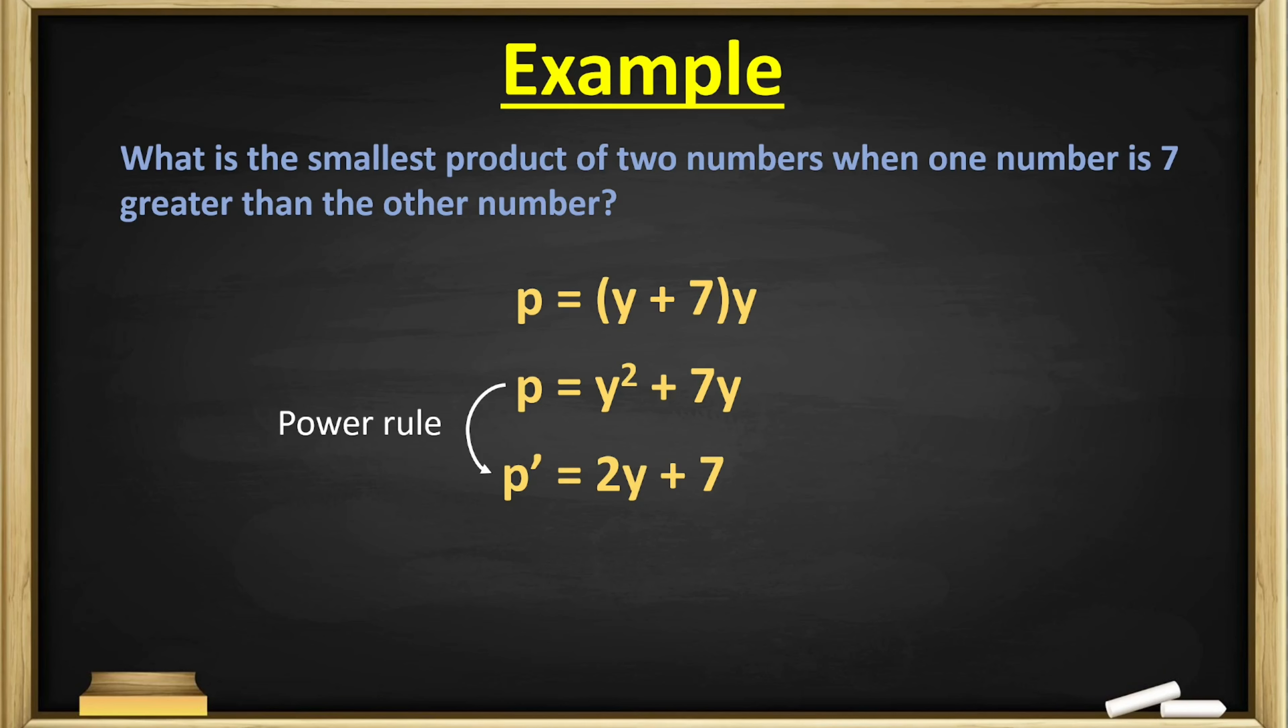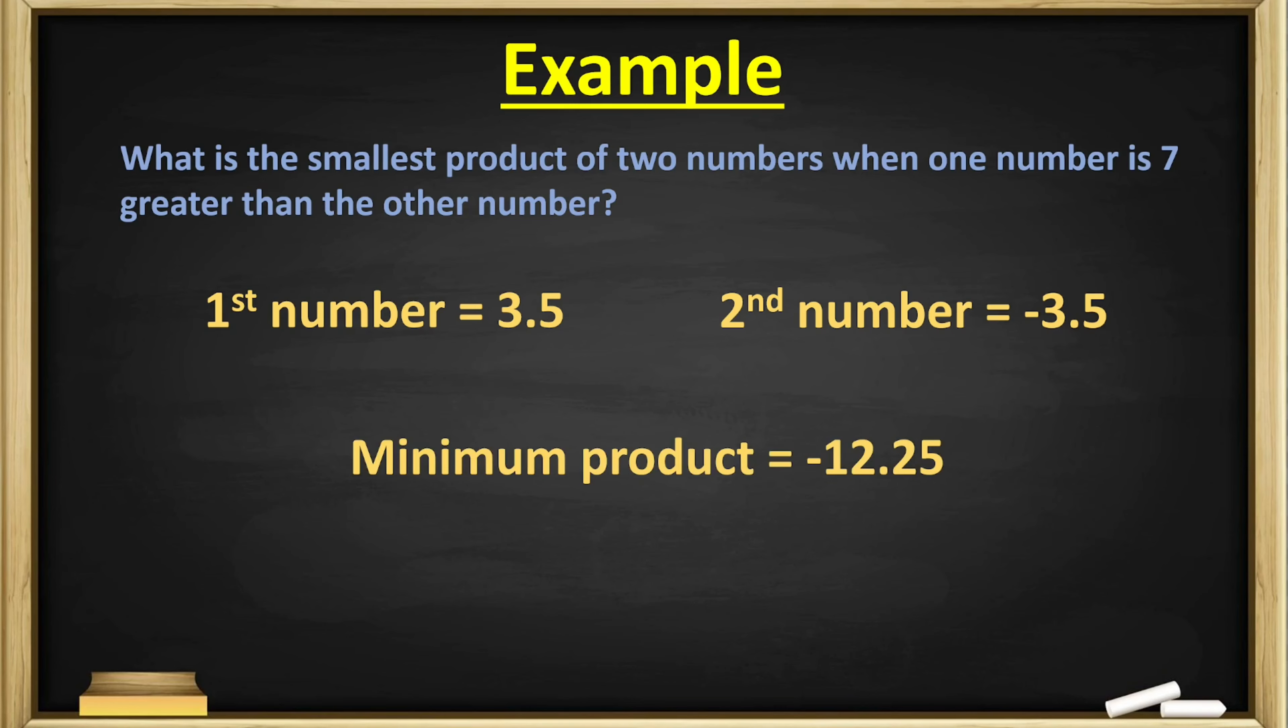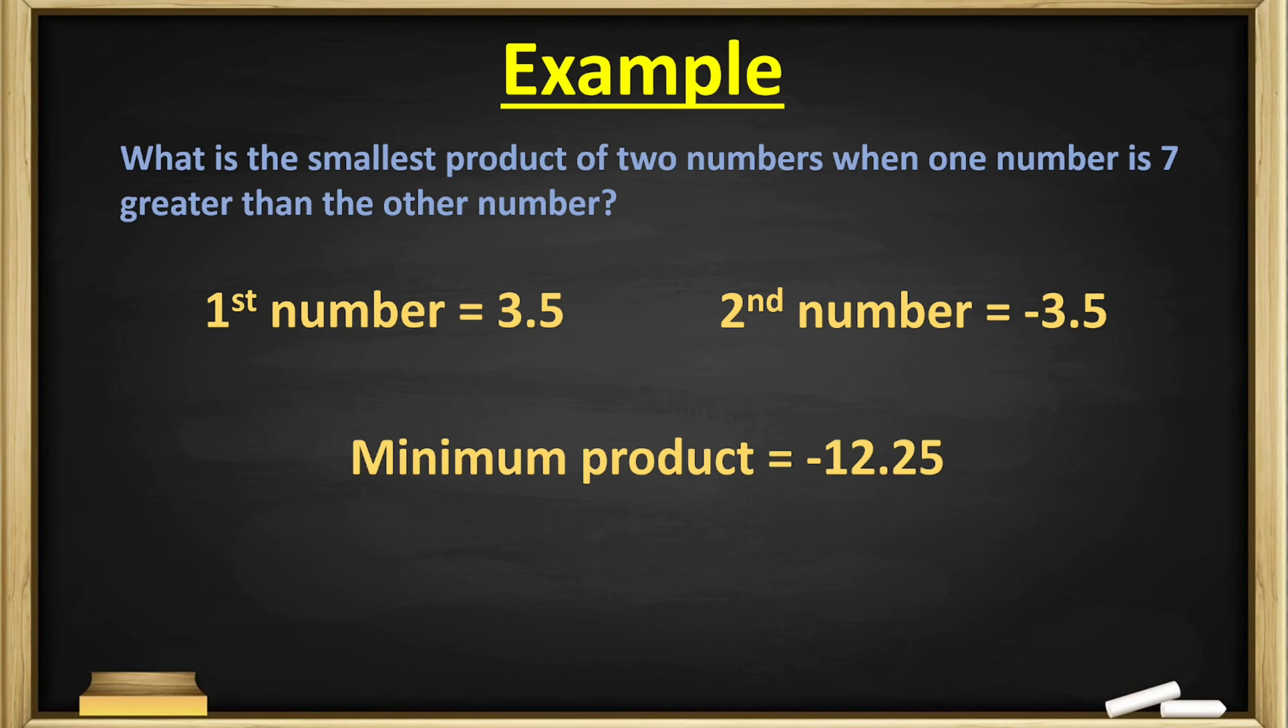And now we can do some calculus. We do the power rule to get p' = 2y + 7, and then we set the derivative, or p', as 0. So now it's 0 = 2y + 7, and we can solve for y pretty easily as -3.5. Once we know y, we still have to find x. Remember our secondary equation? We can plug -3.5 into the y and solve for x, which is 3.5. So now we know that the first number is 3.5 and the second number is -3.5, which means the minimum product is -12.25.